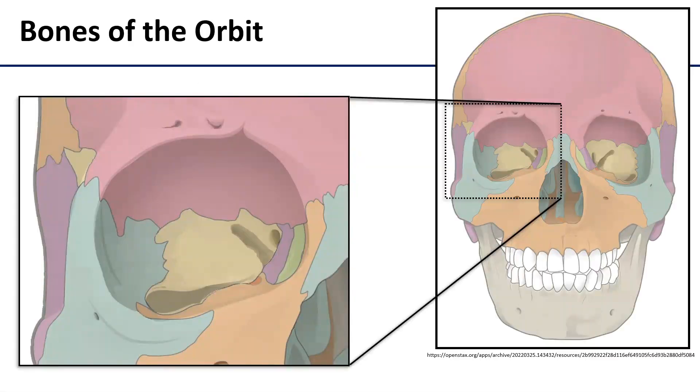The walls of the orbit, as you can see in these images here, are formed by multiple cranial bones — seven of them in fact — so let's walk through them.